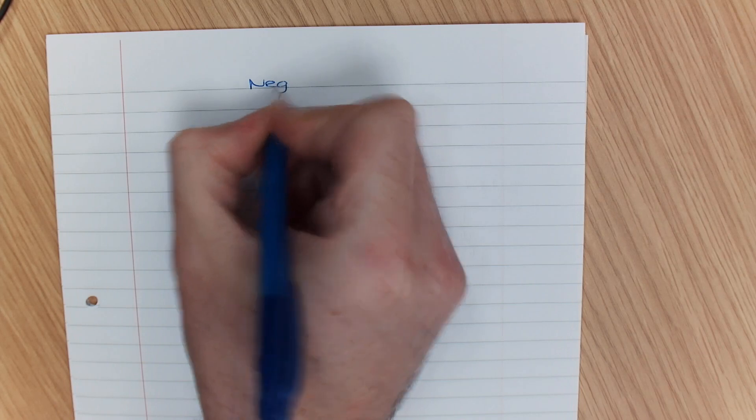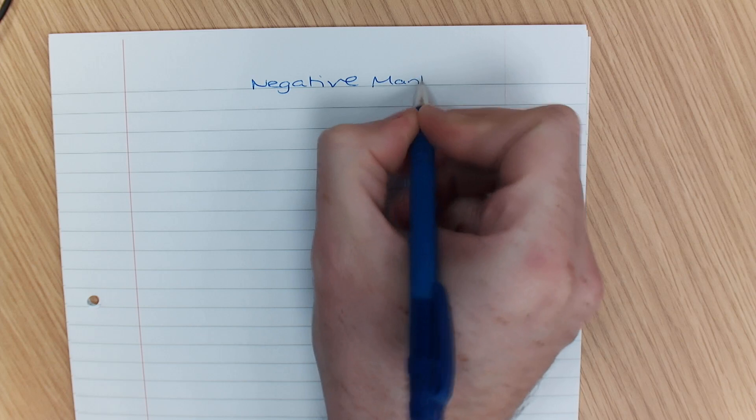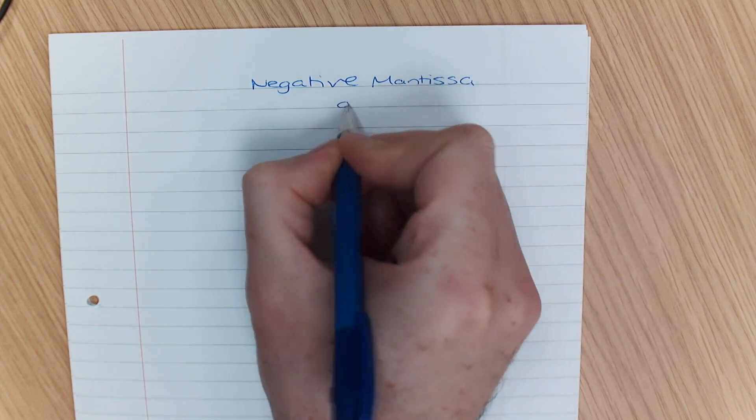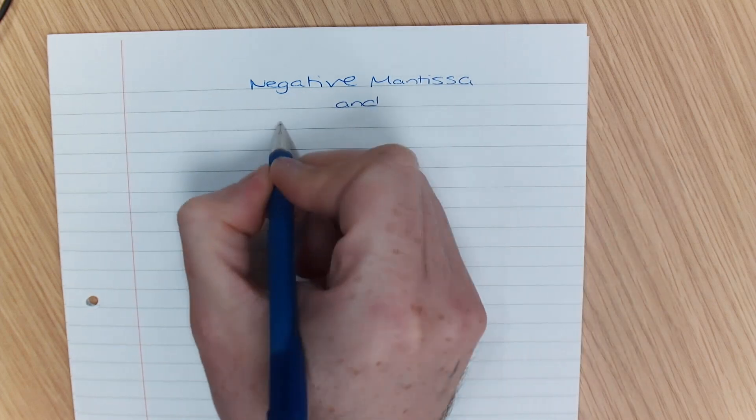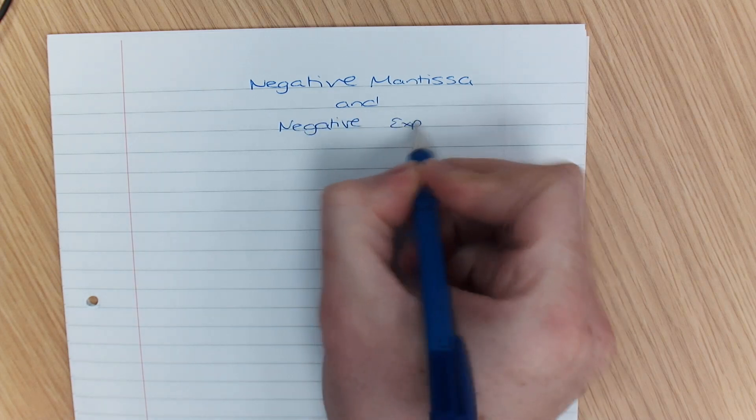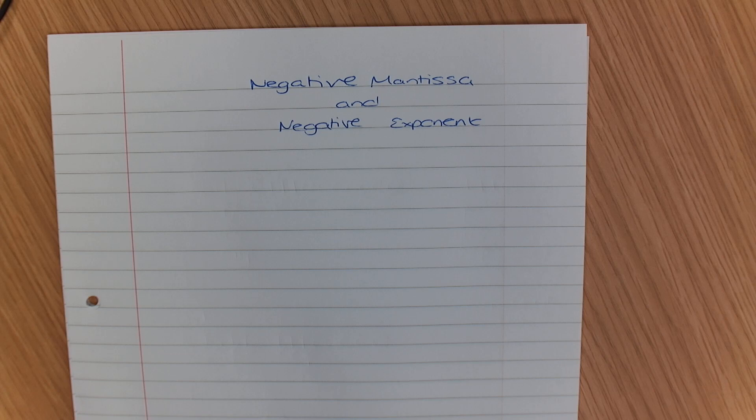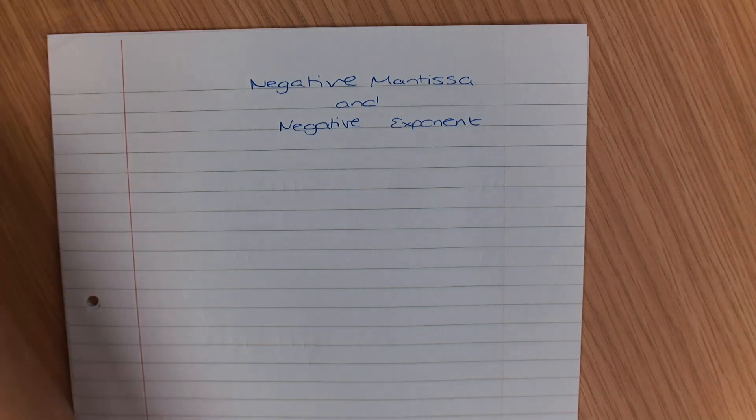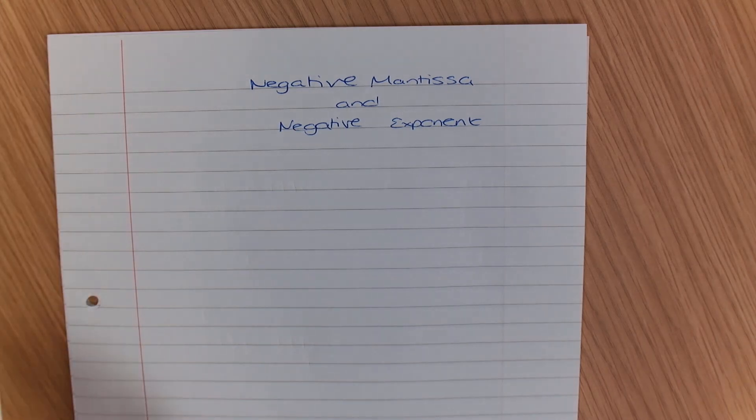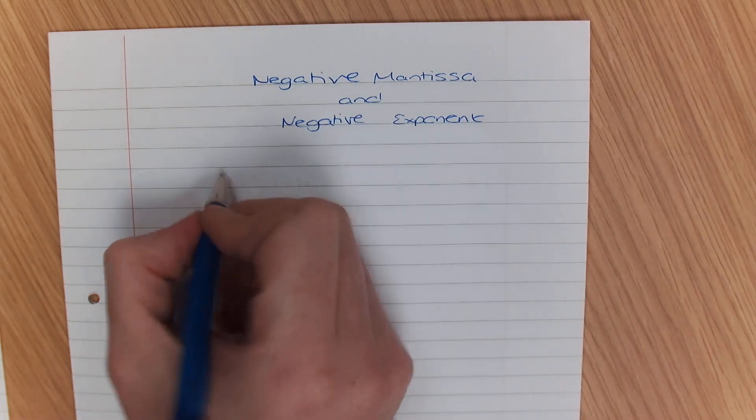Sometimes it's important to know that you can have a negative mantissa and you can also have a negative exponent. Now it's important to recognize that in the AQA computer science exam you are allowed a calculator, so that means you can work out the decimal values. What I'm going to do is give you our 12-bit number first.